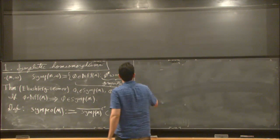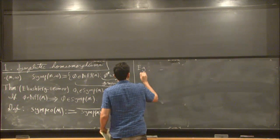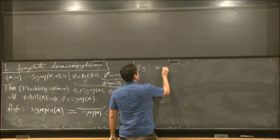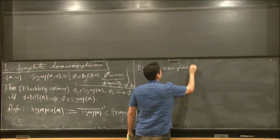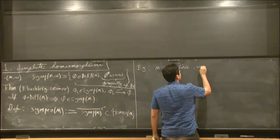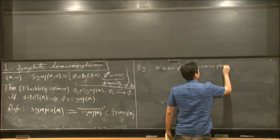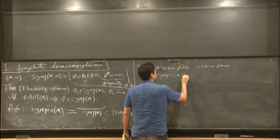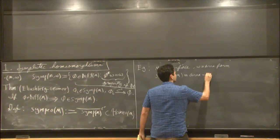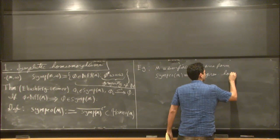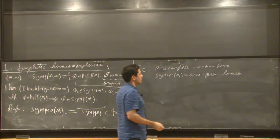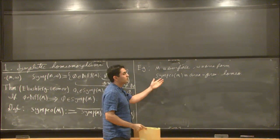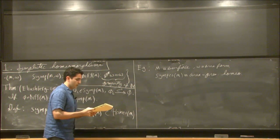Here's an example of symplectic homeomorphisms. It's a rich and very interesting class of symplectic homeomorphisms. So take M to be a surface, I'll spend most of my time talking about this example, and omega to be an area form. Then the symplectic homeomorphisms of M are just simply its area-preserving homeomorphisms.